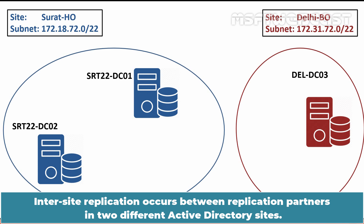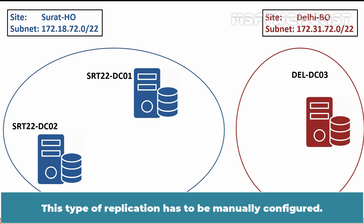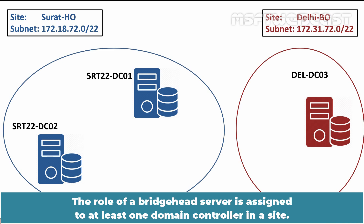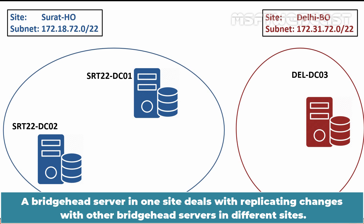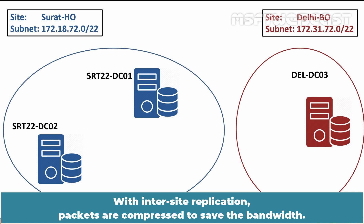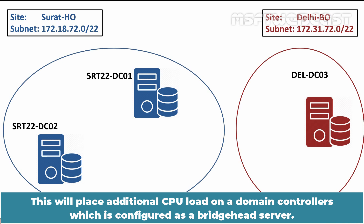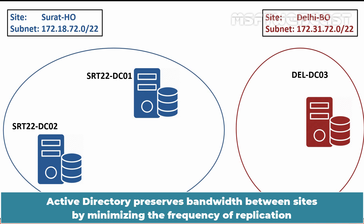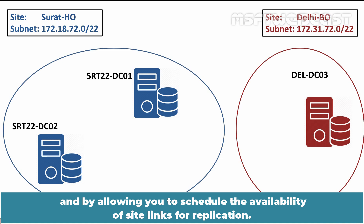Intersite Replication occurs between replication partners in two different Active Directory sites and must be manually configured. It occurs between domain controllers called bridgehead servers — at least one domain controller per site is assigned this role. A bridgehead server in one site handles replicating changes with bridgehead servers in different sites, and you can configure multiple bridgehead servers in a site. With intersite replication, packets are compressed to save bandwidth, which places additional CPU load on the bridgehead server. Bridgehead servers should therefore have sufficient speed and processors to perform the replication.